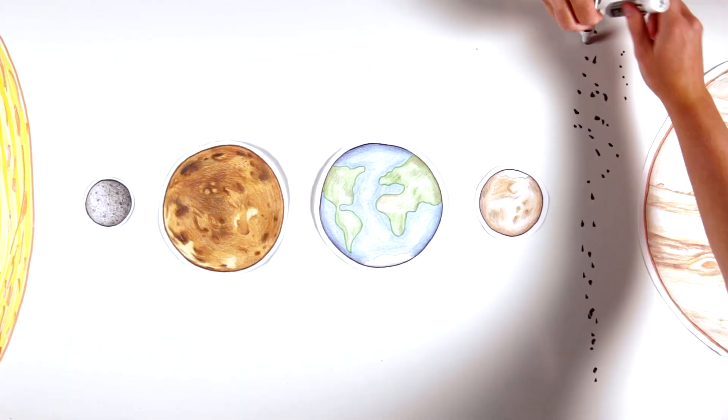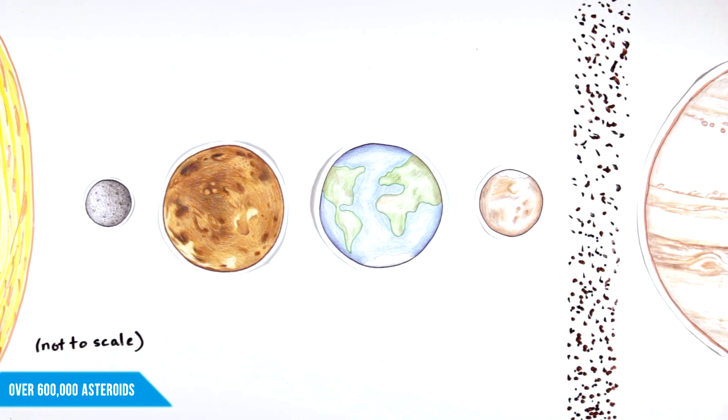Today we know of over 600,000 asteroids, mostly in the main belt between Mars and Jupiter. Collisional dynamics, thermal forces, and the gravitational effects of the giant planets pushed some asteroids out of the belt and into the inner solar system.